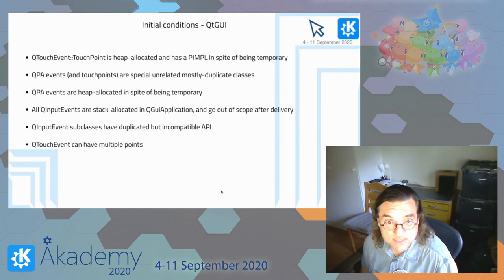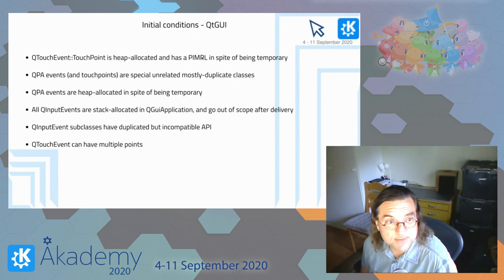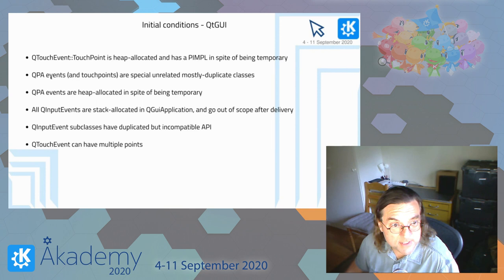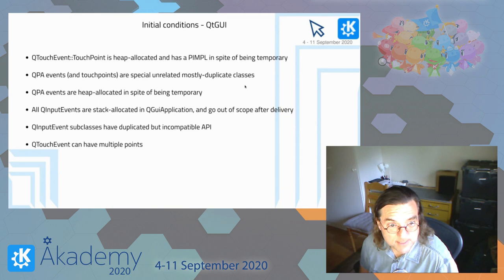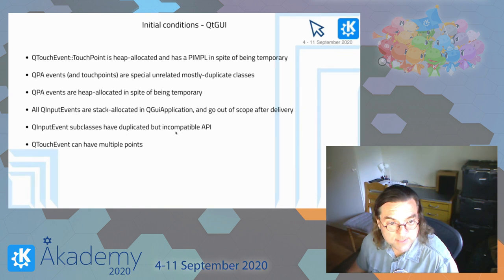Looking at the Qt GUI initial conditions: in Qt5, TouchPoint was heap-allocated and had a pimpl despite being temporary — quite heavyweight for something created and thrown away so quickly. QPA events and touch points are duplicate classes with similar but not close enough APIs. QPA events are heap-allocated despite being temporary, which we can't easily change because of cross-thread queuing. On the other hand, QInputEvents are stack-allocated in QGuiApplication and go out of scope after delivery. QInputEvent subclasses have duplicated but incompatible APIs, and only touch event could have multiple points.